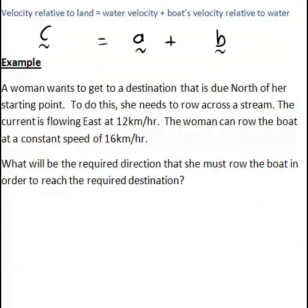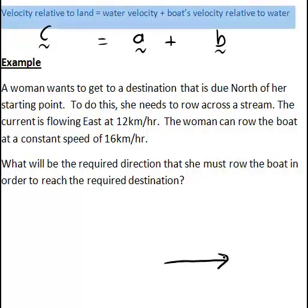For example, a woman wants to get to a destination that is due north of her starting point. To do this, she needs to row across the stream. The current is flowing east at 12 kilometres per hour. So right away we can put that on our diagram, flowing east with magnitude of 12. And because that is the current, that is vector a in our above formula.